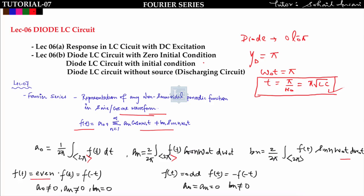One key concept: when f(t) is an even function — that is f(t) = f(−t) — then a_naught and a_n are non-zero while b_n = 0. Similarly, if f(t) is an odd function — f(t) = −f(−t) — then only b_n is non-zero, while a_naught and a_n equal zero.